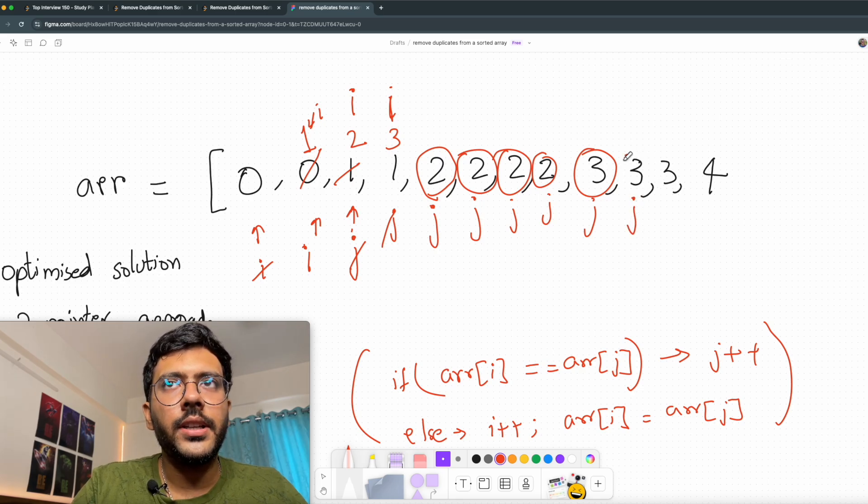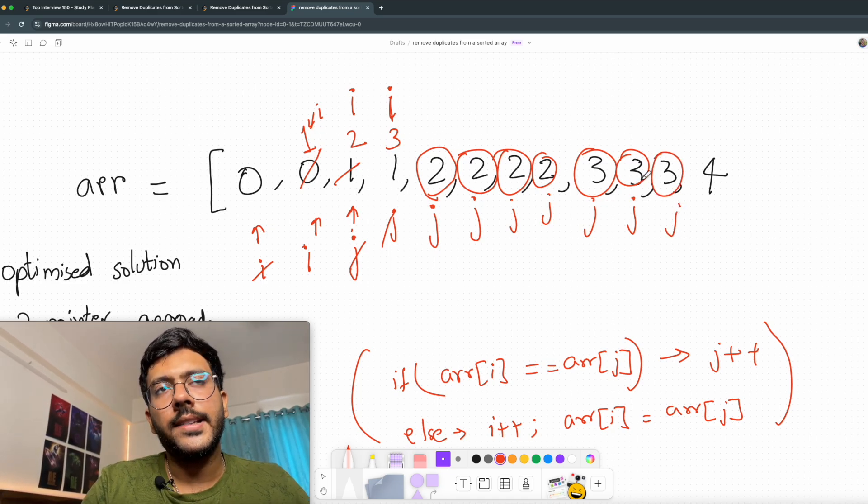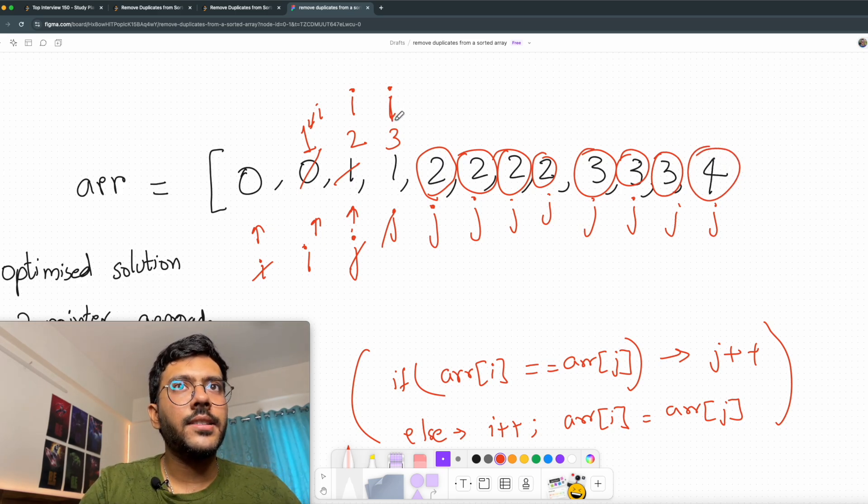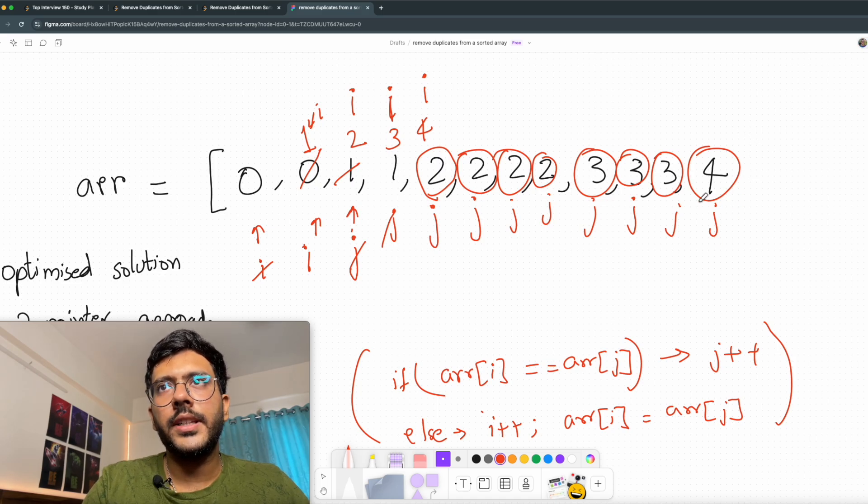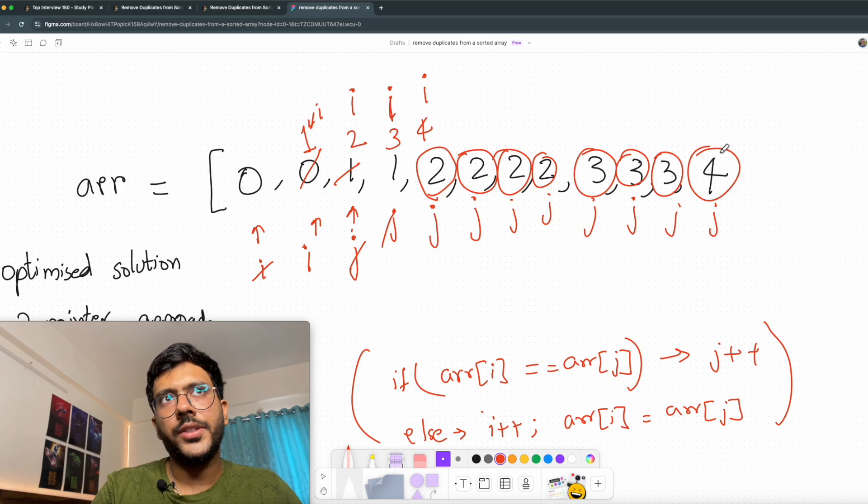Now I will increment j. j has 3 and i also has 3, so next again increment j. j has again 3. Now increment j and j is 4 and i is 3, so both are not equal. So I increment my i and I store this new value at this position. Now j can't go further. j has run through the entire array, so we stop the execution here.